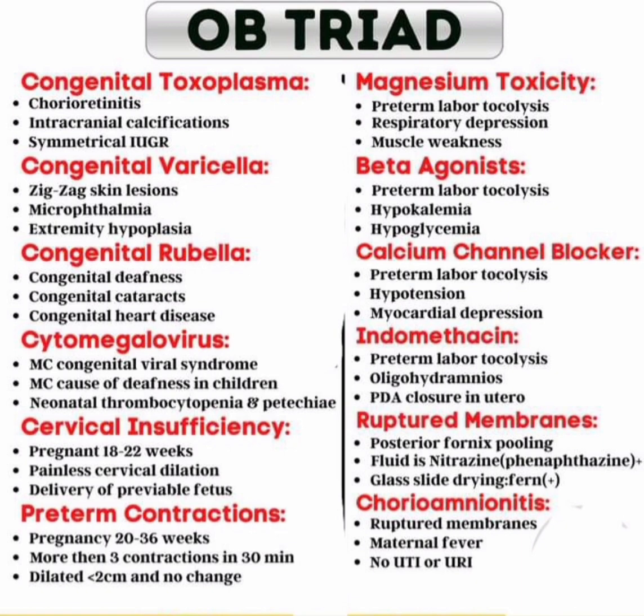Next, indomethacin triad: preterm labor tocolysis, oligohydramnios, and PDA closure in utero. Ruptured membrane triad: posterior fornix pooling fluid, positive nitrazine test, and ferning on glass slide drying. Chorioamnionitis triad: ruptured membranes, maternal fever, and no UTI or upper respiratory tract infection.